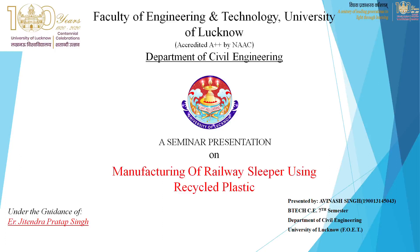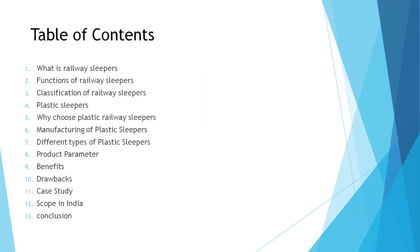Now we proceed to the table of contents. The topics covered are: what is a railway sleeper and its functions, classifications of railway sleepers, plastic sleepers, why choose plastic railway sleepers, manufacturing of plastic sleepers, different types of plastic sleepers, product parameters, benefits, drawbacks, case study, scope in India, and conclusion.